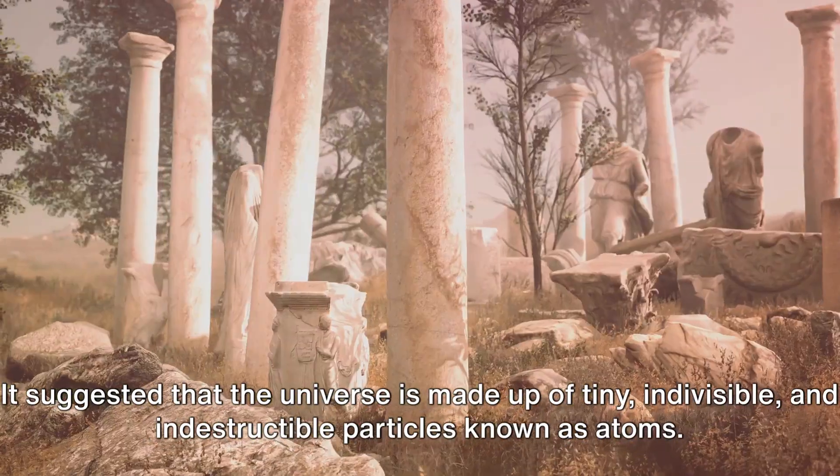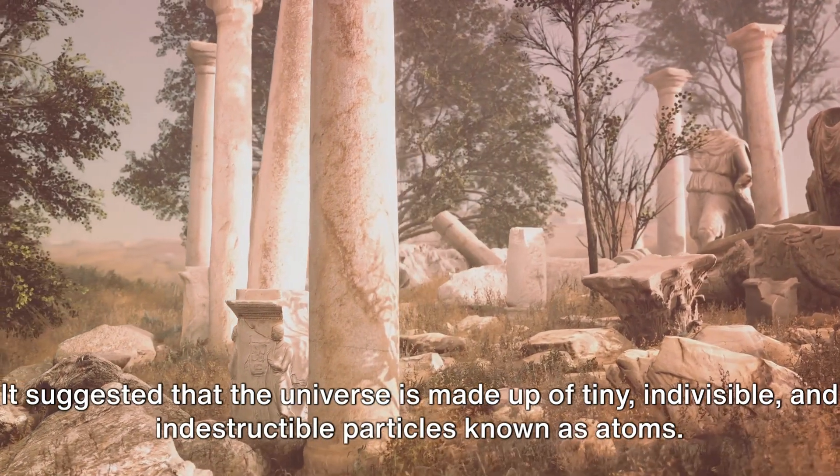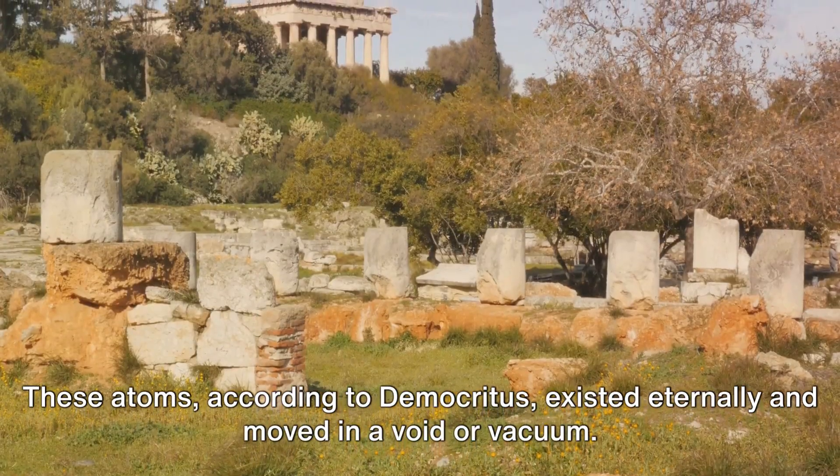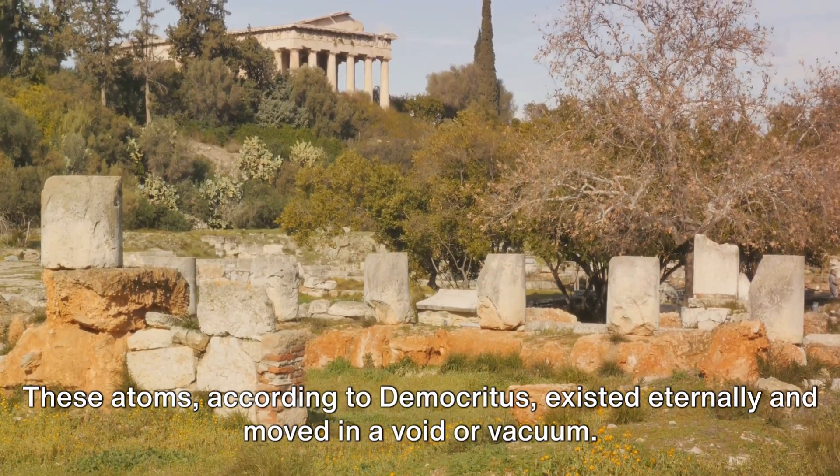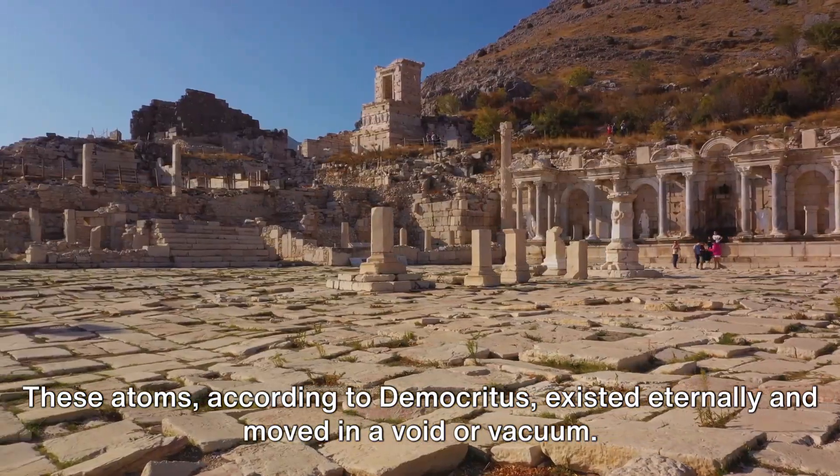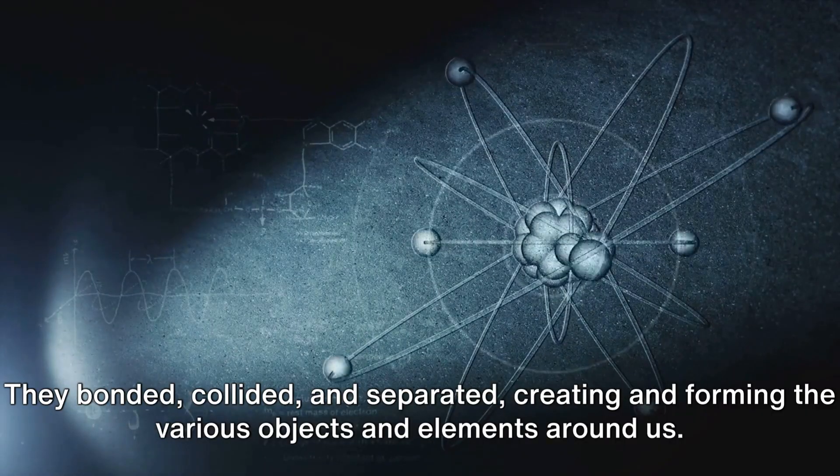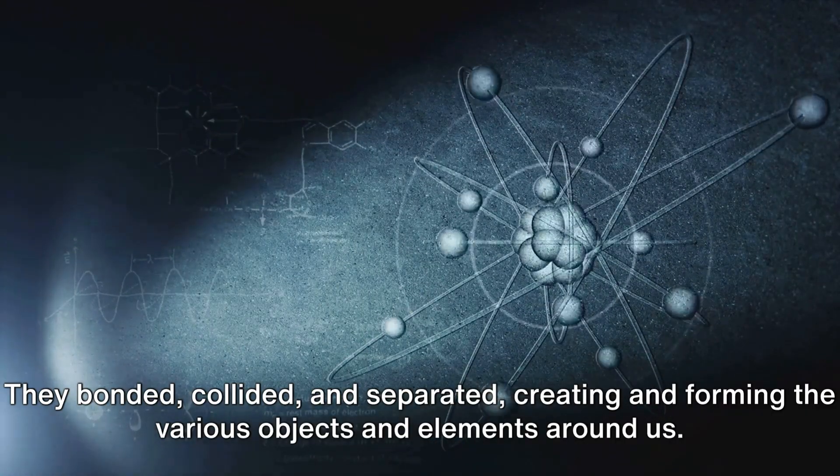It suggested that the universe is made up of tiny, indivisible, and indestructible particles known as atoms. These atoms, according to Democritus, existed eternally and moved in a void or vacuum. They bonded, collided, and separated, creating and forming the various objects and elements around us.